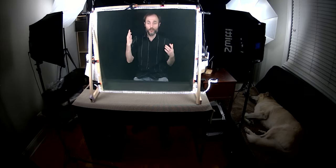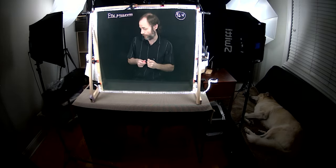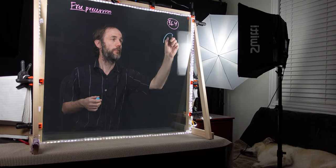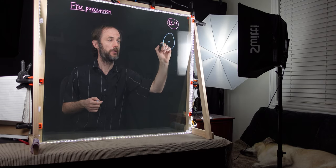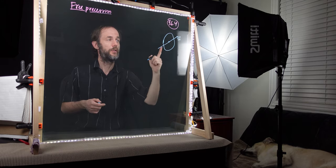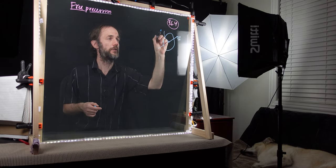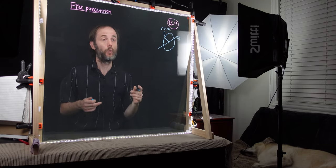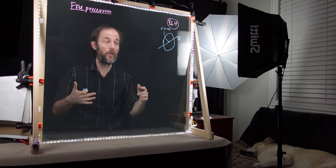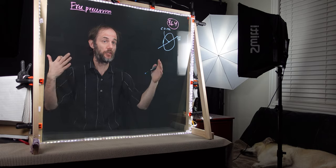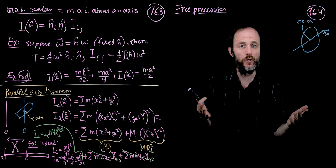Hello and welcome to part 4 of lecture 16, where we're going to be talking about free precession. What is free precession? Suppose we have a rigid body spinning with an angular velocity omega around its center of mass. We want to figure out what happens in time to this body after it spins for a while.